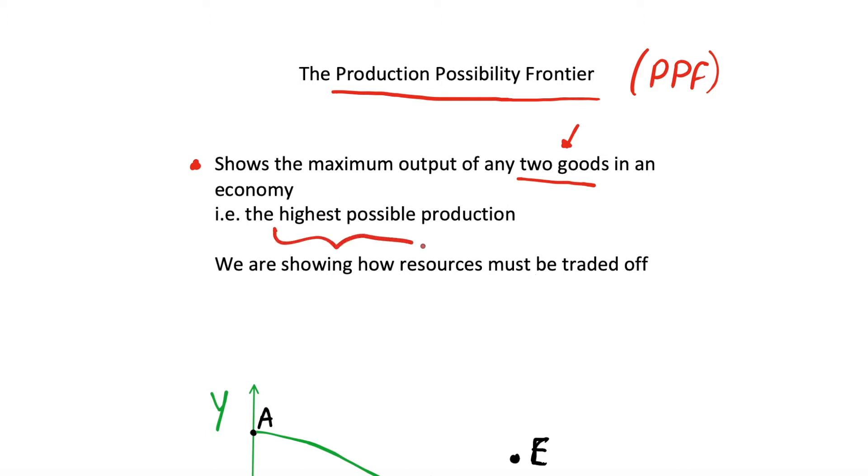We can remember that this is the curve being shown just by the name. The production possibility frontier is showing the highest possible production that we can have, and just another name for this curve, we can think of this as a frontier or a boundary, as other people may know it as a PPB, but usually we use PPF. And because we have the highest possible production, we are showing how resources must be traded off between our two chosen goods, because we are producing the maximum amount possible. So in order to increase production of one good, we're then going to have to decrease production of the other good.